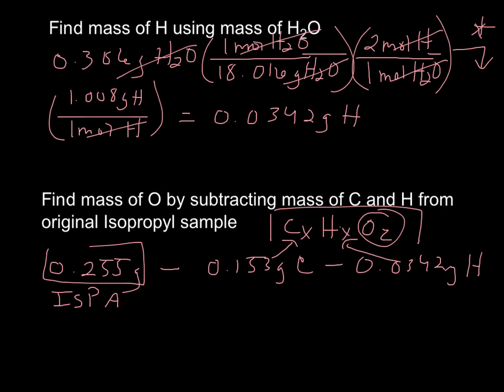Now our remaining oxygen is what results from the total mass here. That's the total mass: carbon, hydrogen, and now oxygen. So oxygen is going to be 0.068 grams, with sig figs included.